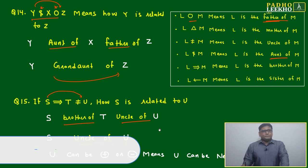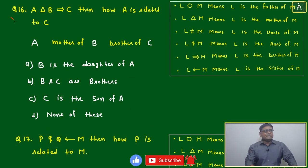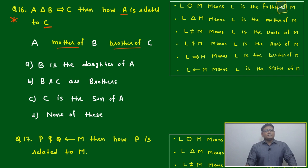Question 16: This will be little interesting and we have to be careful. If A triangle B equal to C, then how A is related to C? A mother of B, brother of C. Now between A and C, B is the daughter of A. A is the mother of B means B can be daughter or can be son. Gender of B is not clear, but B and C are brothers.